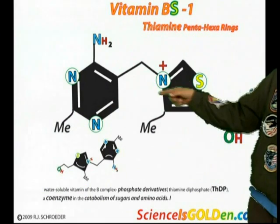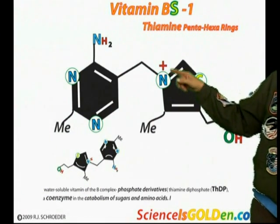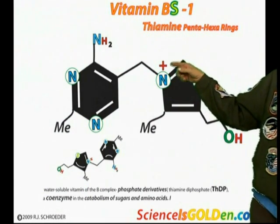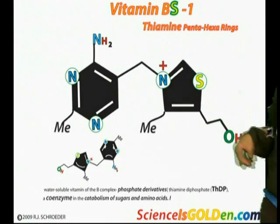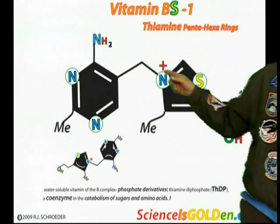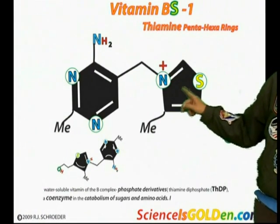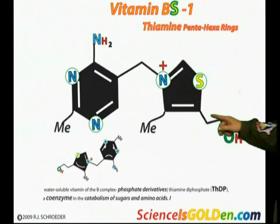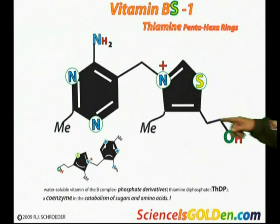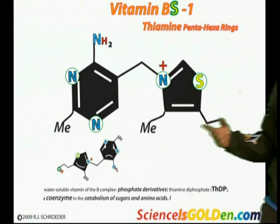You've got a nitrogen with four bonds that you usually don't find, so it gives it kind of a plus charge — delta plus. Methyl hanging off that ring, one carbon, two carbons OH — that would be an ethanol.